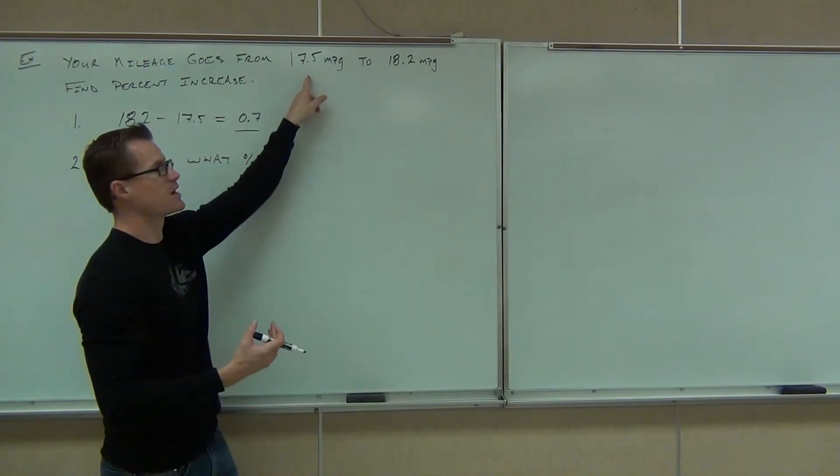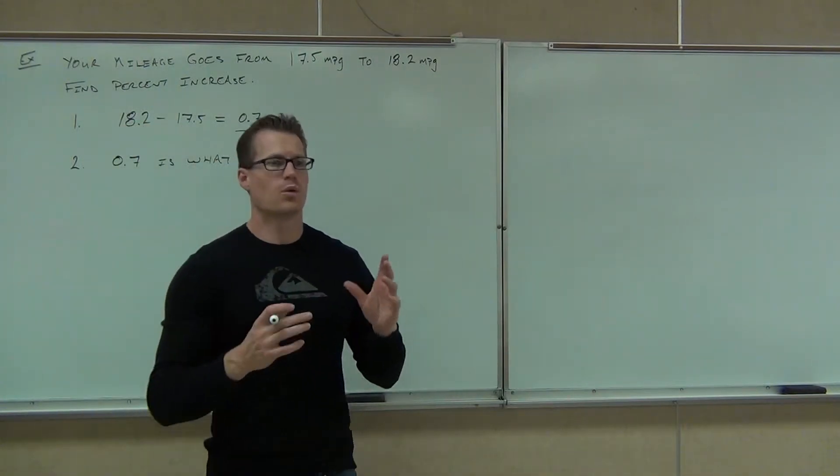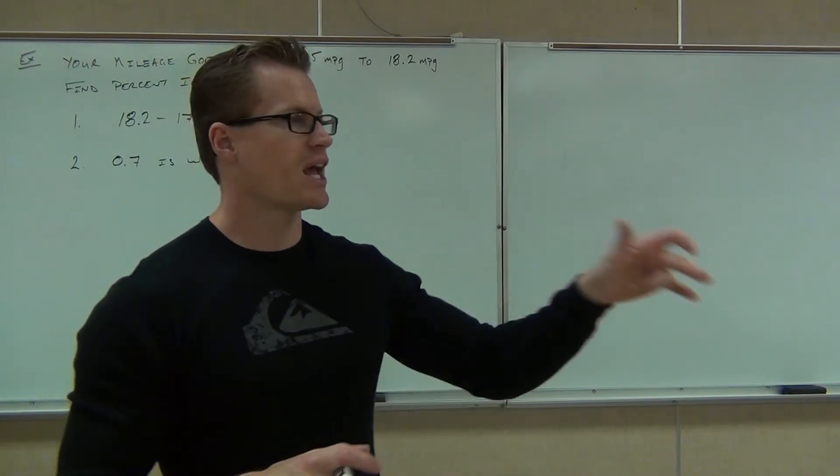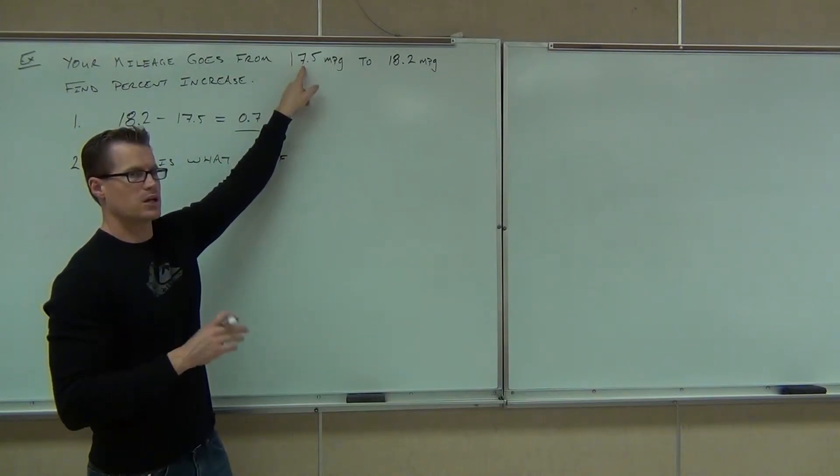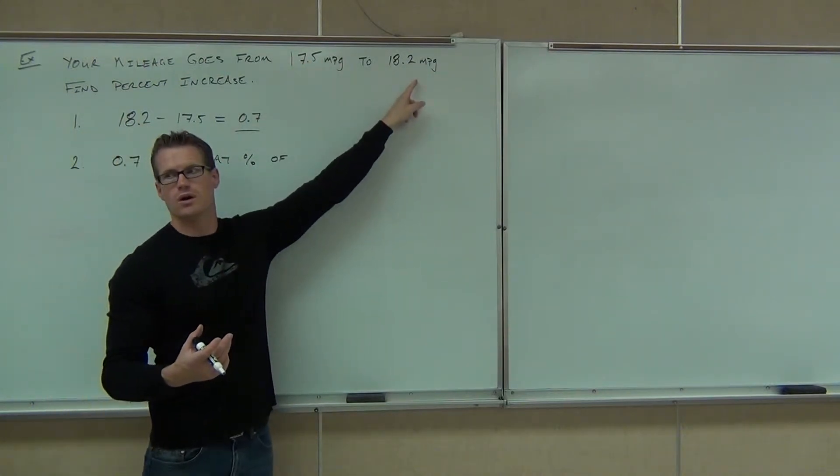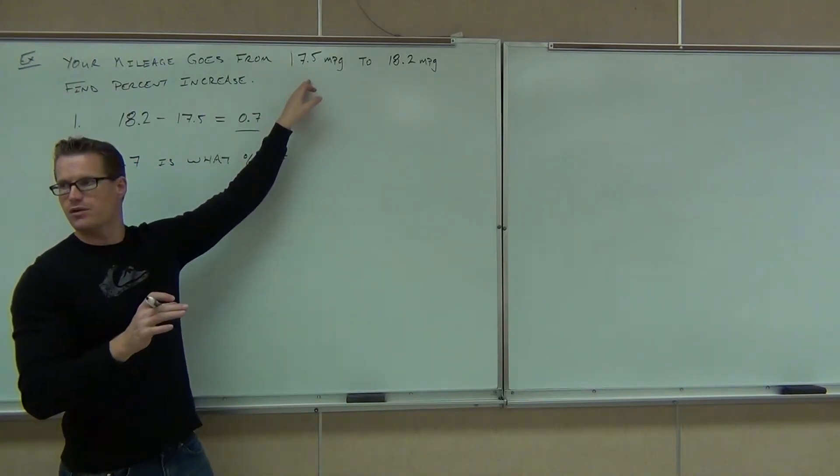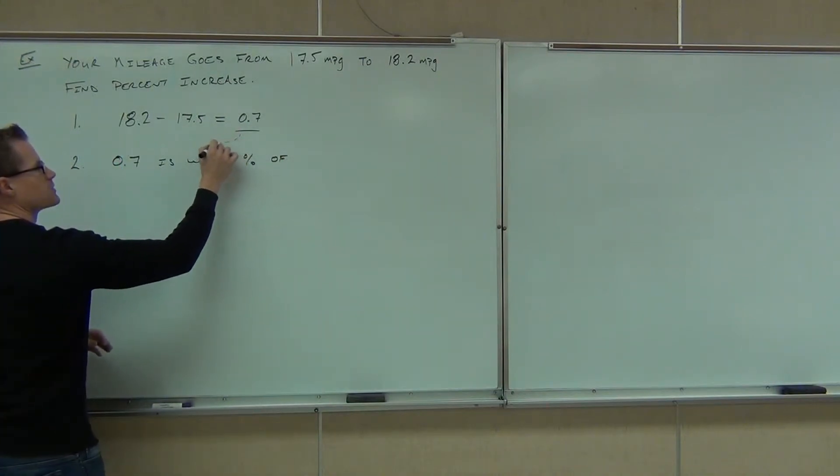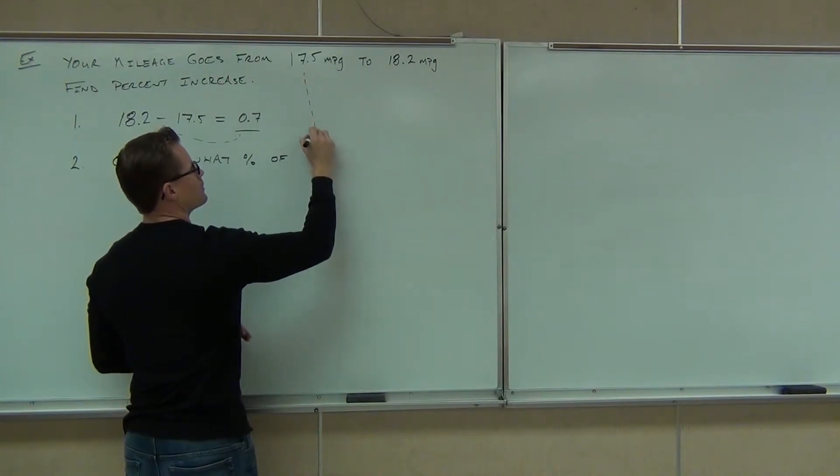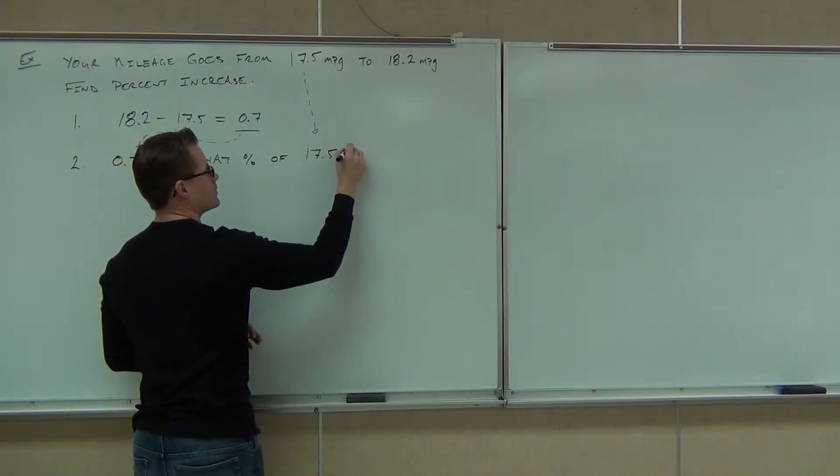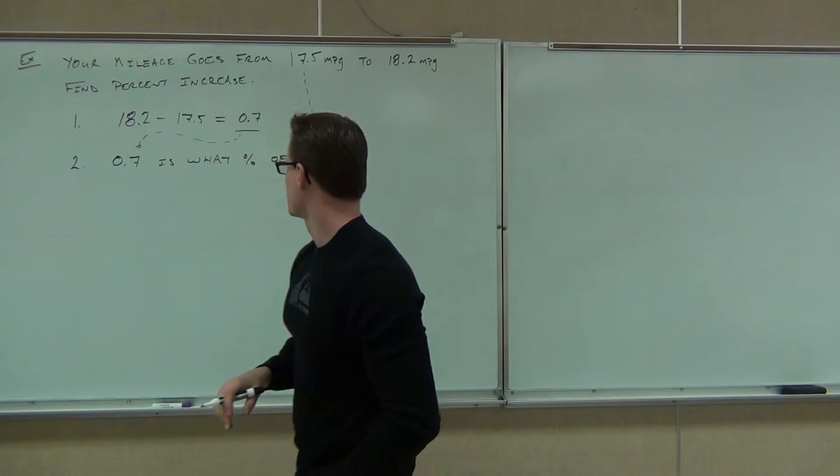We're trying to figure out the increase based on our original number. We're not picking the 17.5 because it's smaller. We won't be picking the 18.2 because it's bigger. What we're looking at is what number did you start with? What number did you end with? When we looked at our gas mileage, it started at 17.5, right? Something caused it to be increased to 18.2, but it started here. So, we're basing our increase on what we started with. So, this difference goes here. What you started with goes there. And we answer this question. 0.7 is what percent of 17.5?